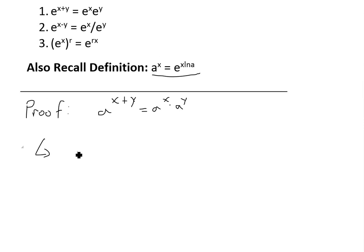If we use this definition, we can write a to the power of x plus y, and just replace this x with x plus y. So we'll have e to the (x plus y), and then brackets times it by ln a right here.